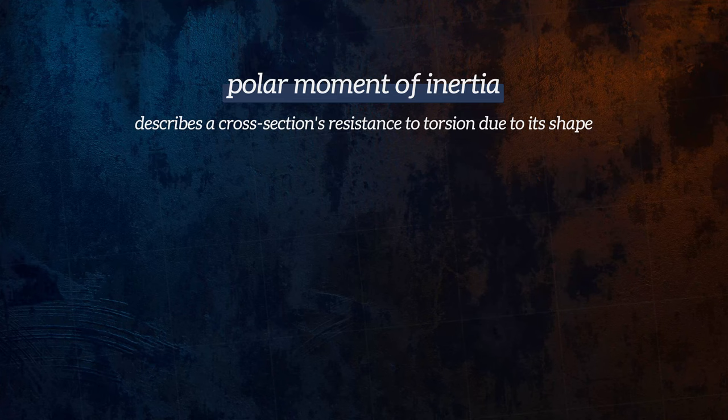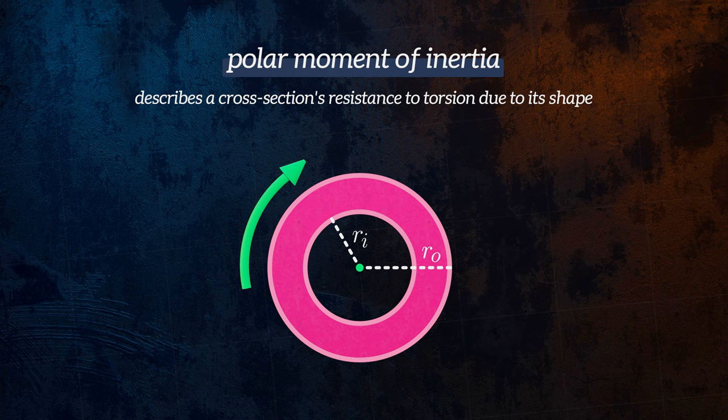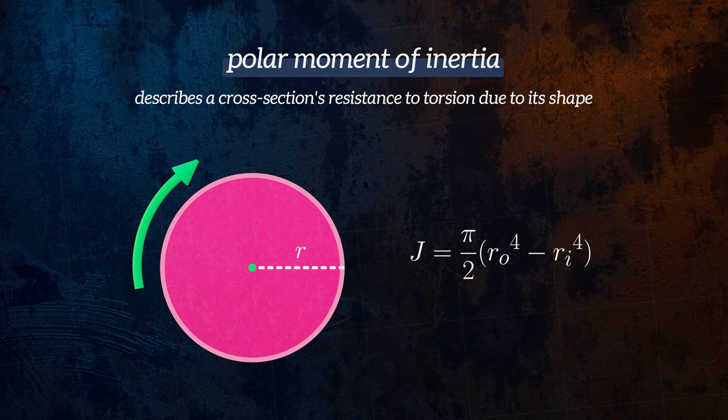with an outer radius RO and an inner radius RI, can be calculated using this equation. Setting the inner radius to 0 gives us the equation for a solid bar.